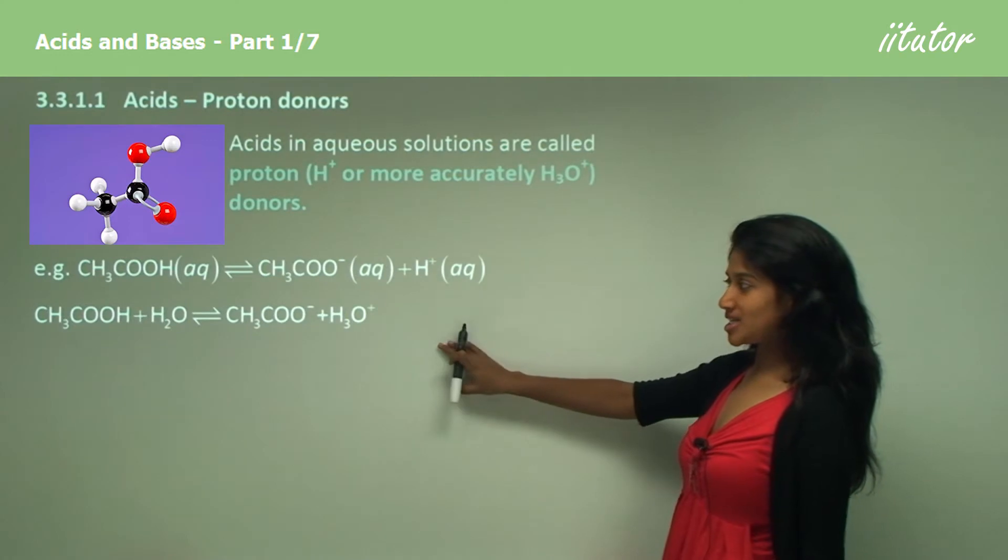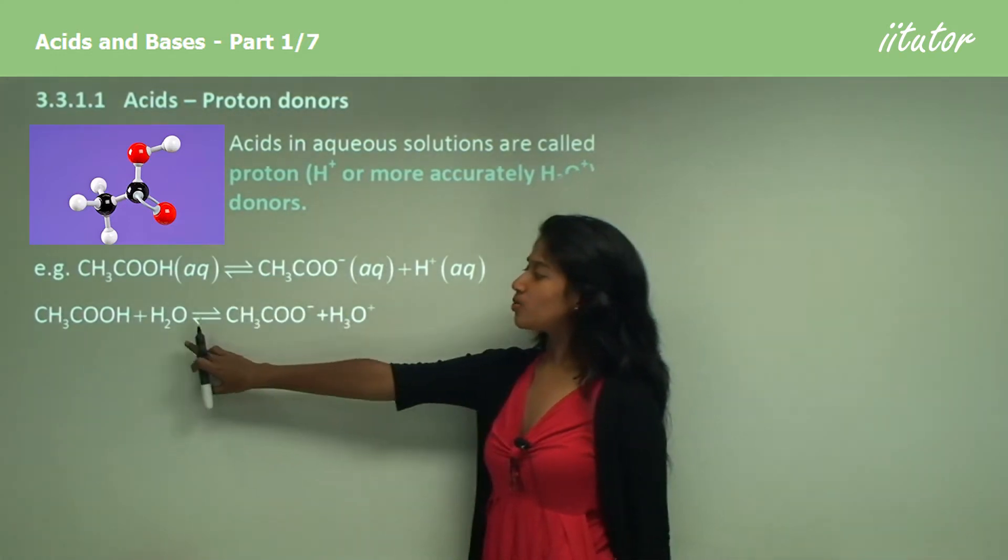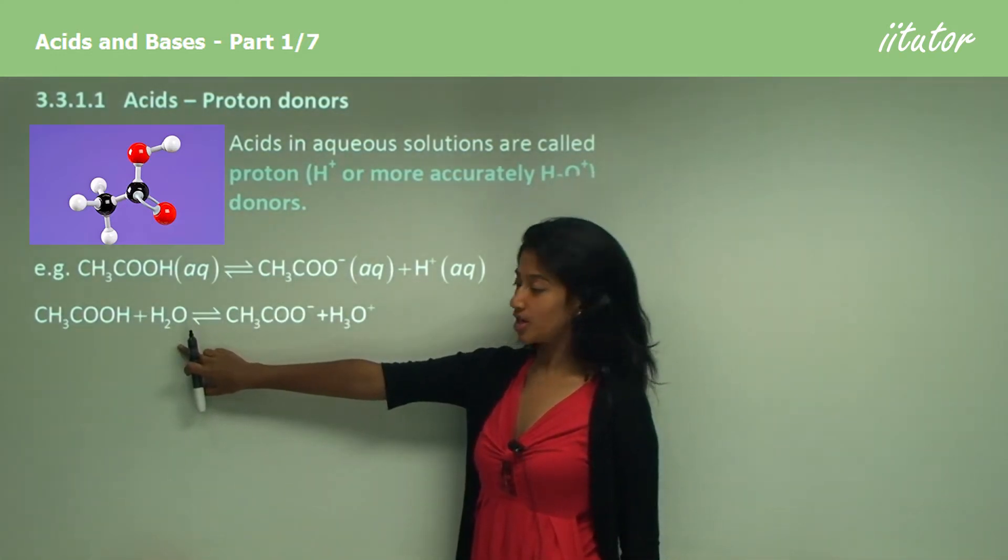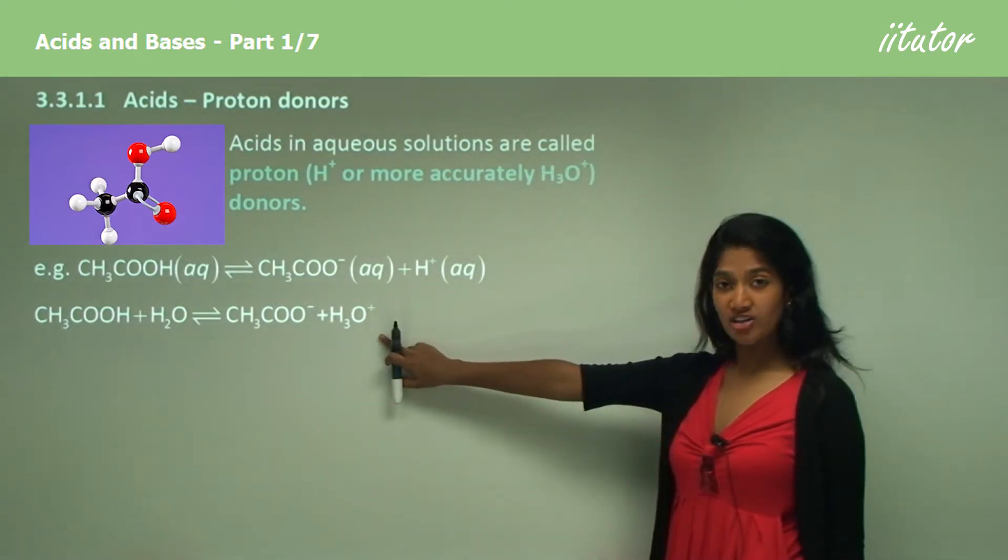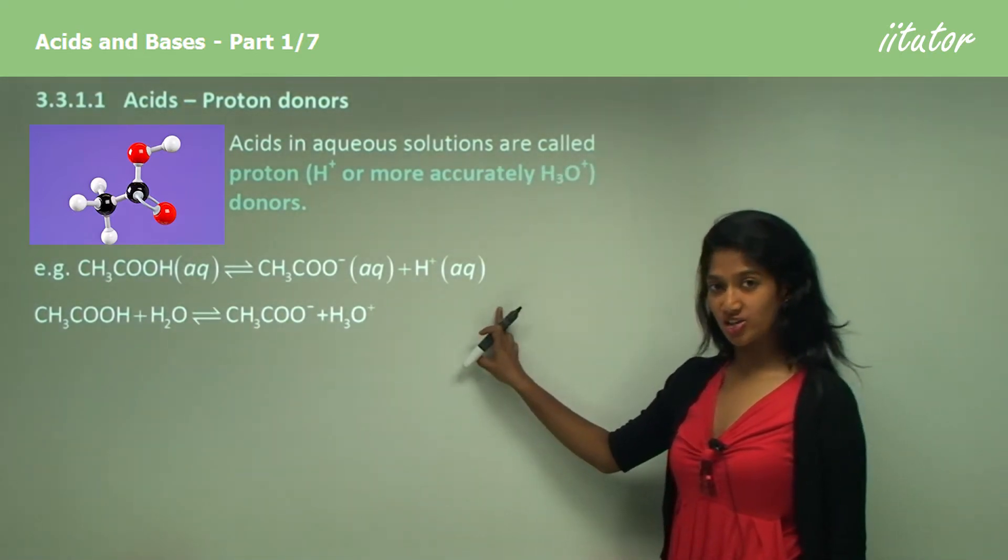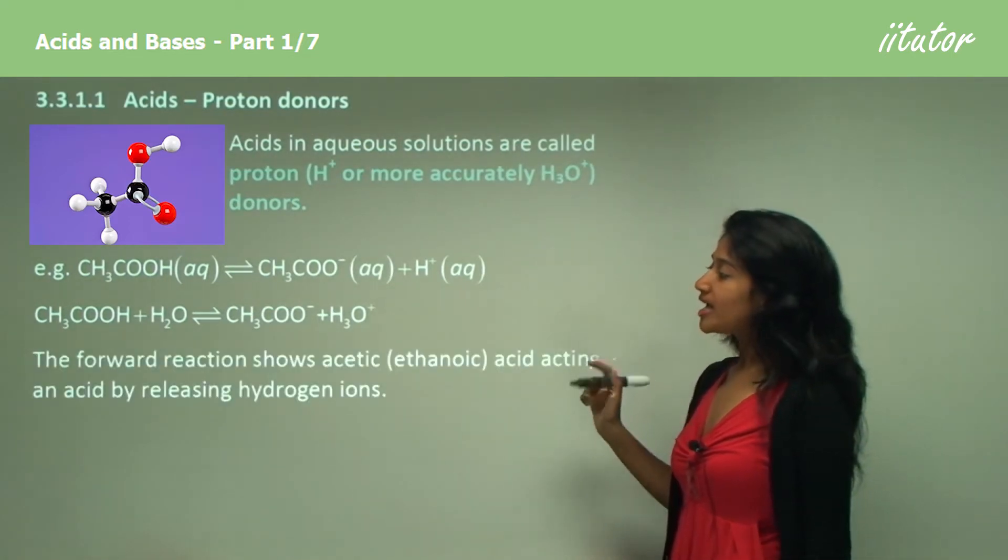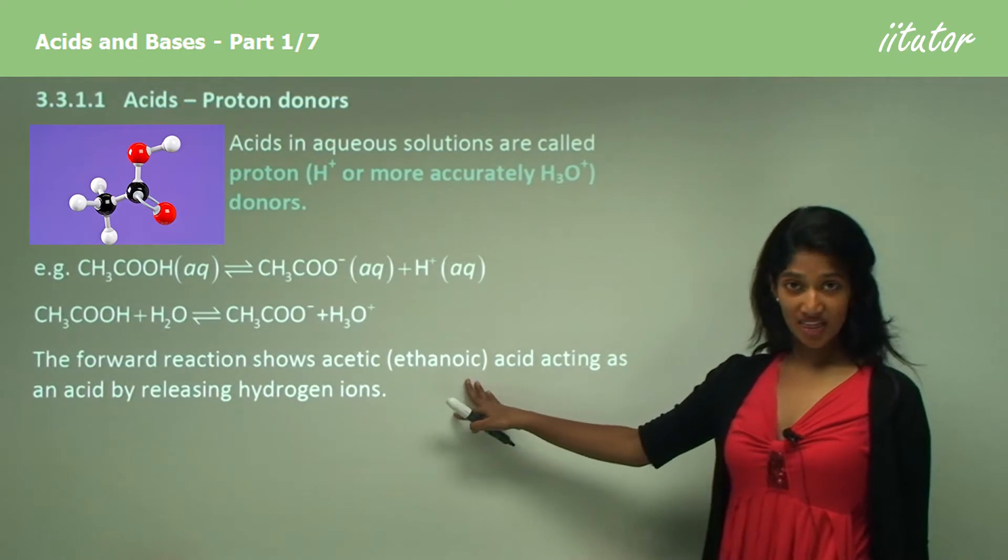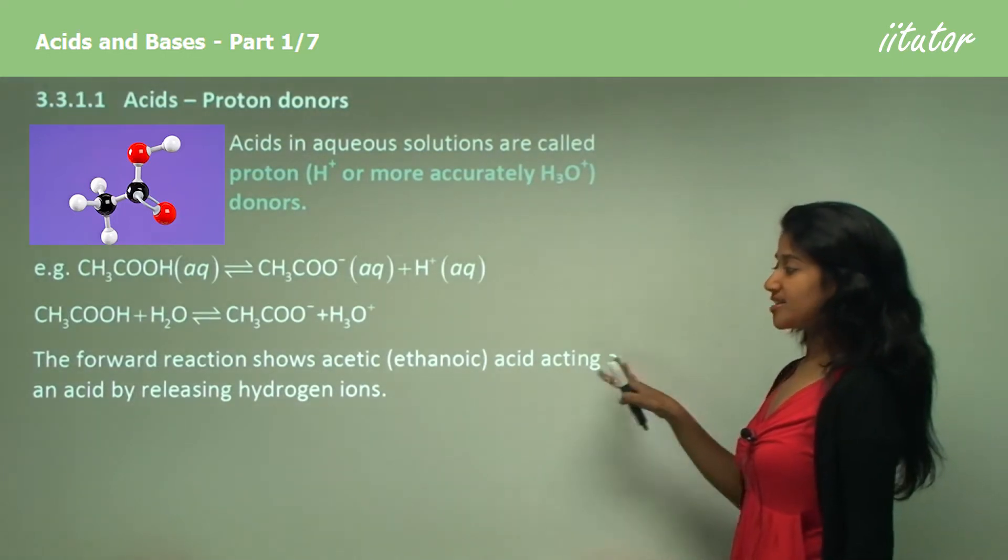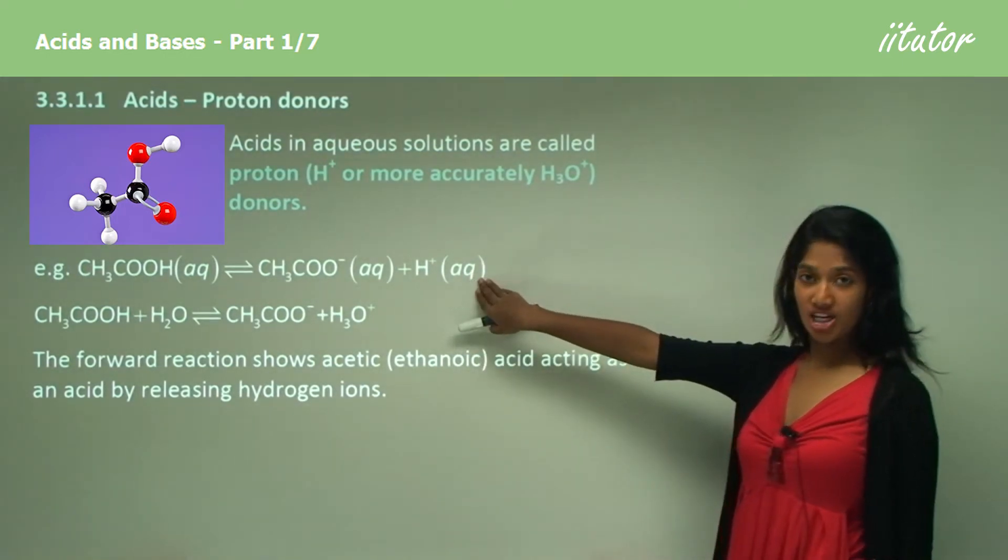These two are practically the same thing, but here we have specifically mentioned the water, and because we mentioned the water we have to add a hydronium ion instead of a hydrogen ion. The forward reaction shows acetic acid, also known as ethanoic acid, acting as an acid by releasing the hydrogen ion.